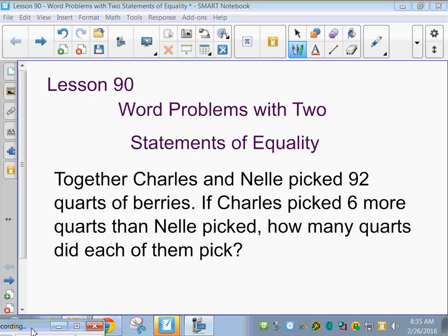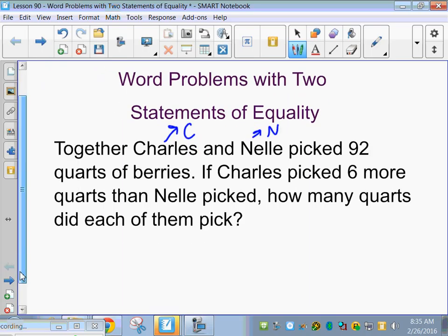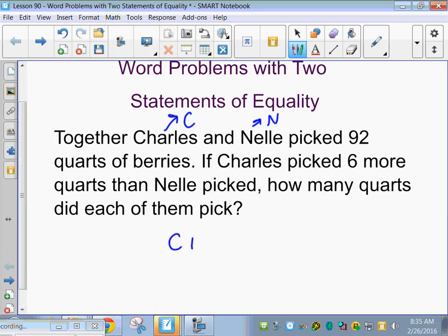So the first equation, we're going to use C and N. So raise your hand if you can give me that equation. Good. So Charles plus Nell equals 92.